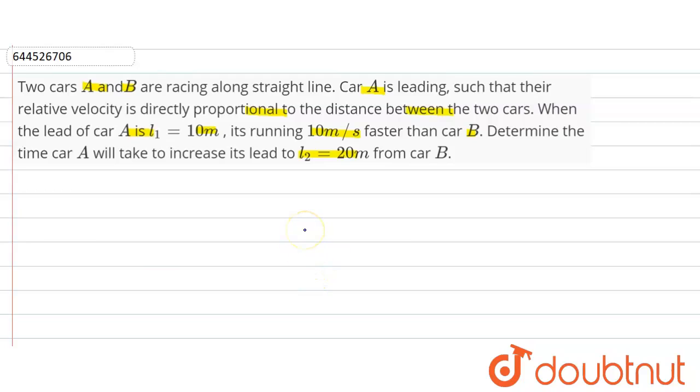Here, velocity of A minus velocity of B means relative velocity of car is directly proportional to distance. So here we can write relative velocity Vr equals Va minus Vb equals K into L, directly proportional to L. So this will be KL.